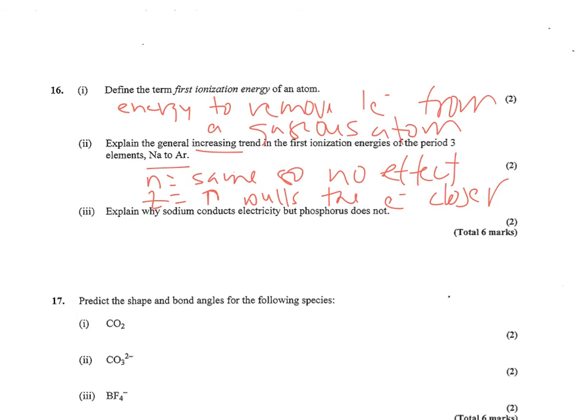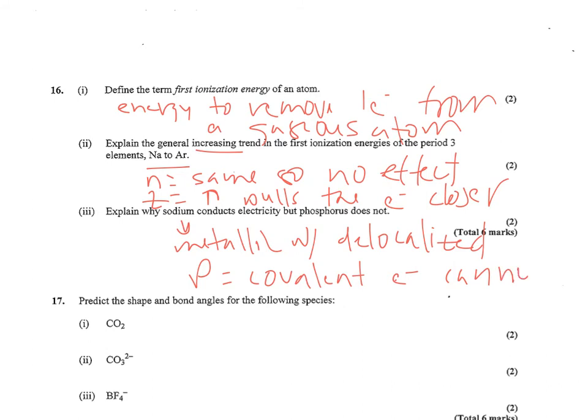Number 13, why does sodium conduct electricity but phosphorus does not? Because sodium has a metallic bond with delocalized electrons that are able to carry a charge, whereas phosphorus has a covalent bond, so electrons cannot move or the bond is broken.